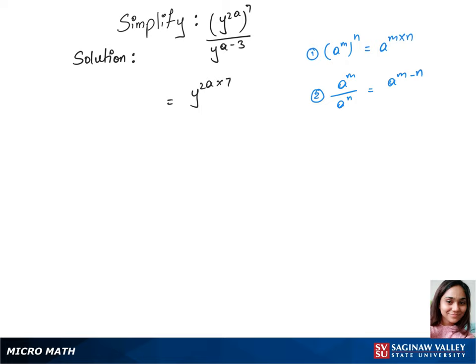y power 2a times 7 over the bottom part remains the same, y power a minus 3. Now we can write this as y power 2a times 7 is 14a over this part remains the same again.